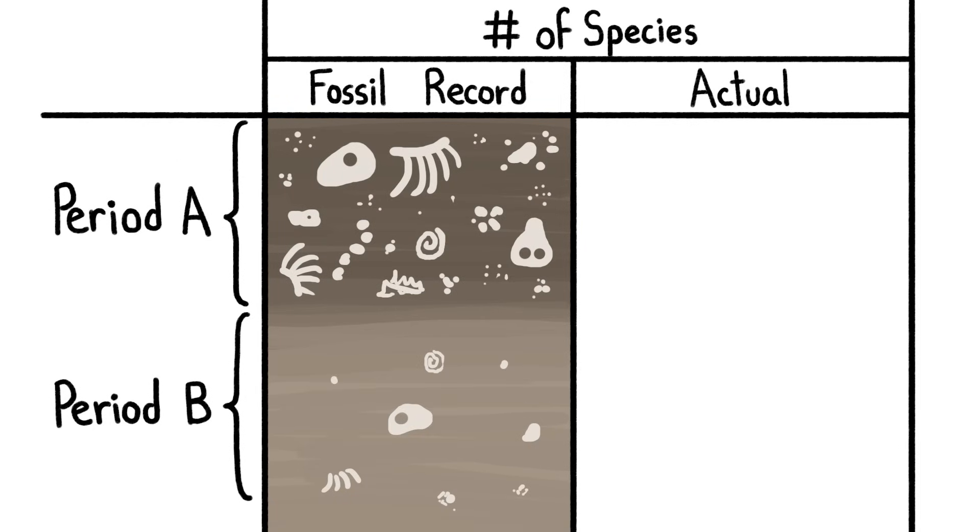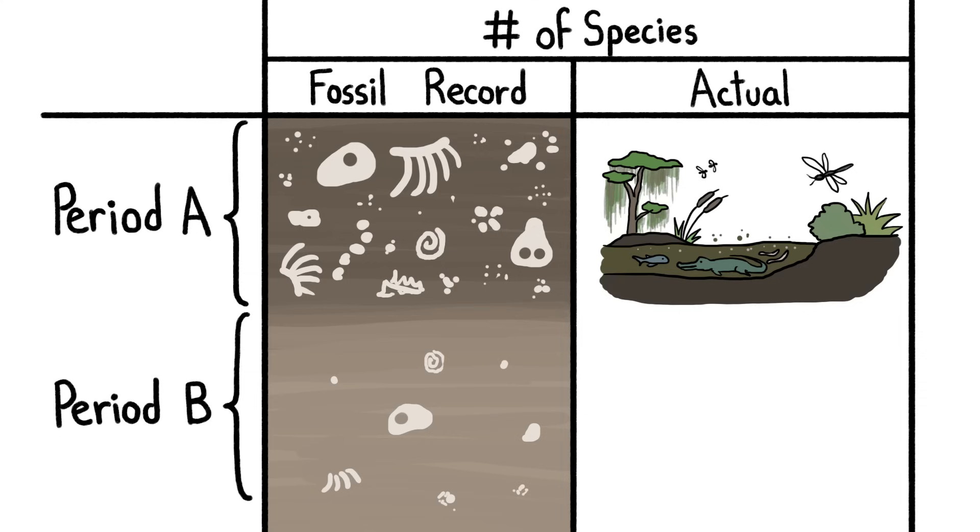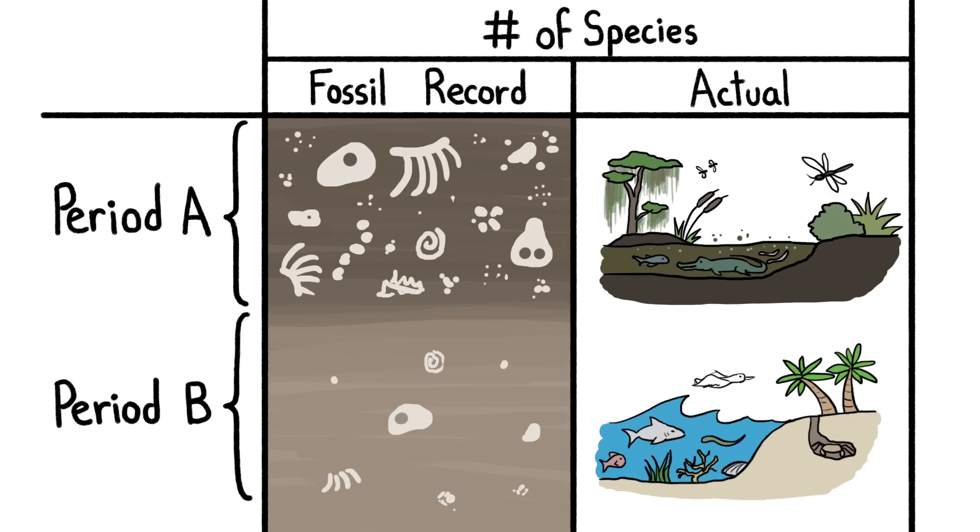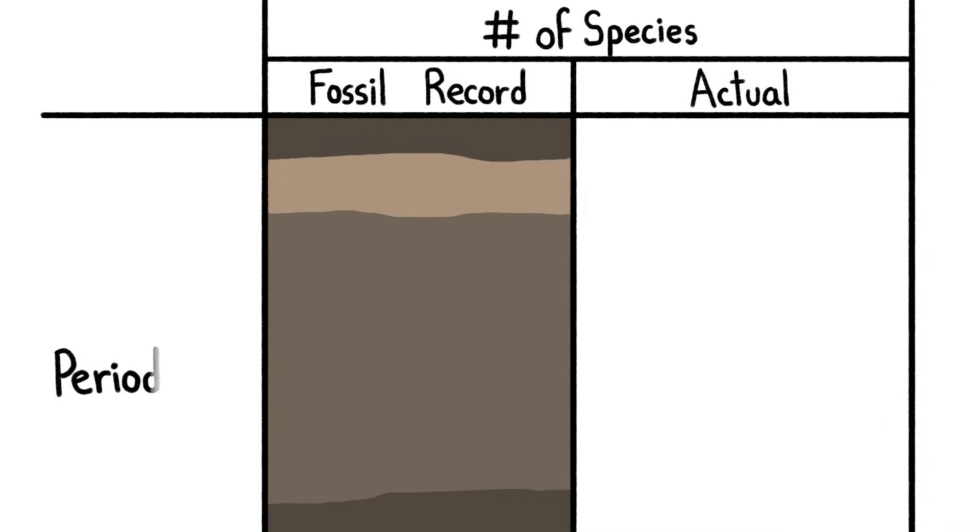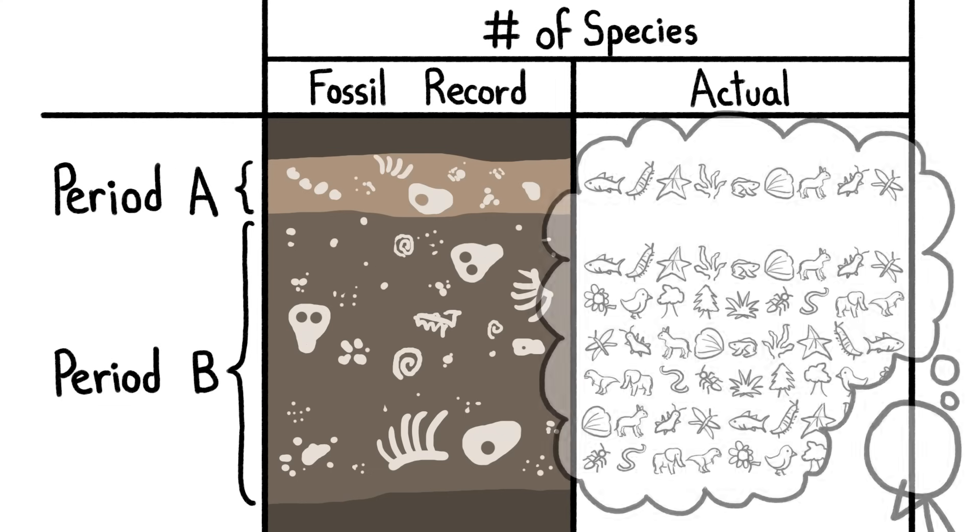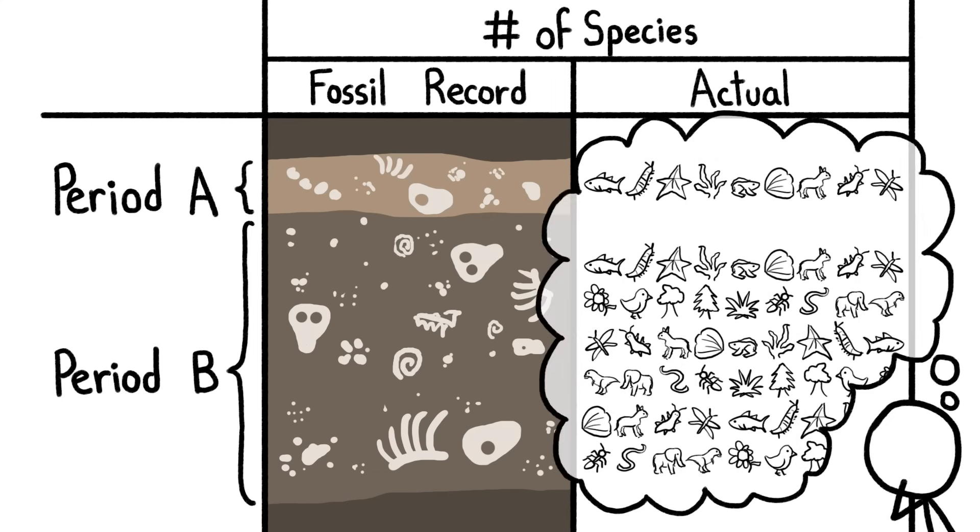For one, we have a lot more fossils from swampy places in periods of the past, not necessarily because those periods were more diverse, but because the calm, muddy conditions were perfect for preservation. We also have a lot more rock from some periods of time than others, and in general, the more rock we have, the more fossils we find, and the more abundant life appears to have been.